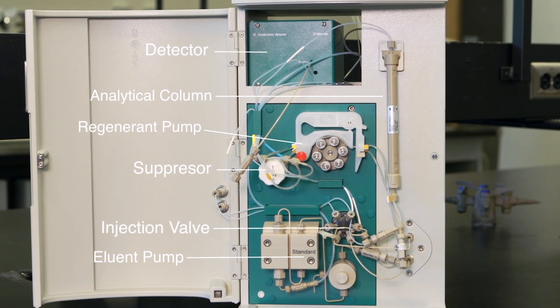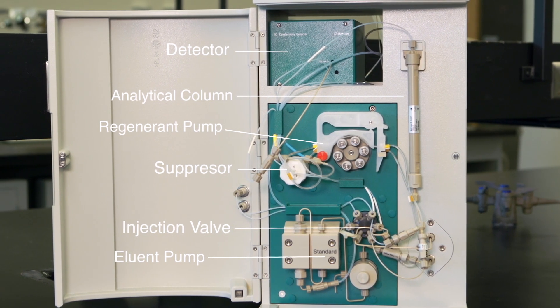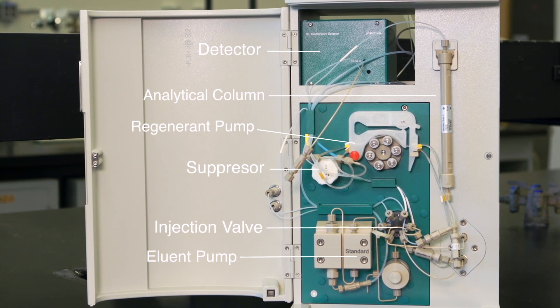The ion chromatograph consists of an eluent pumping system, injection port, column, suppressor, and detector system.